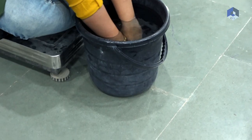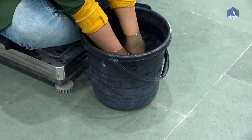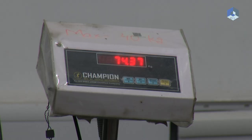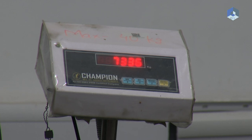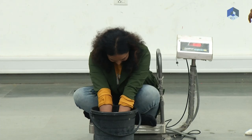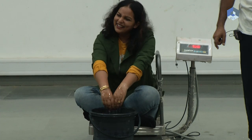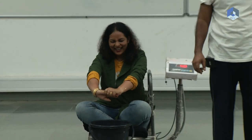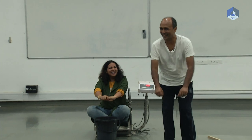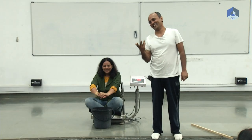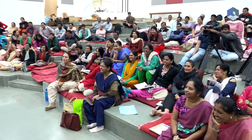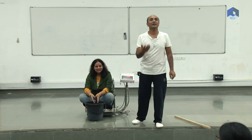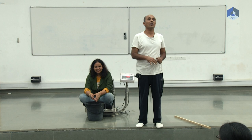Very nice picture — 74.5, 74.1, 73.36. So what should we do to reduce weight? Whenever you sit on the scale, keep your hands in water — your weight gets reduced. You are not touching anything, you are not pushing anything, but your weight is getting reduced. What is going on?